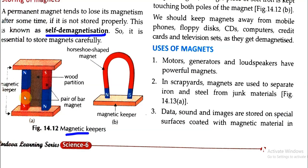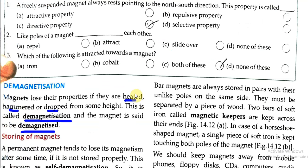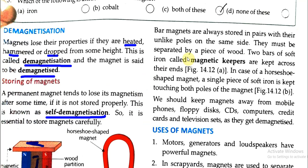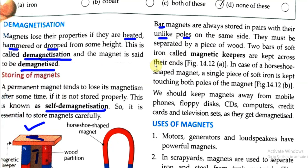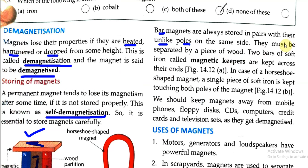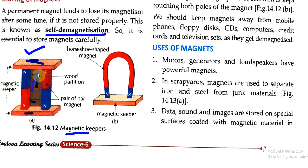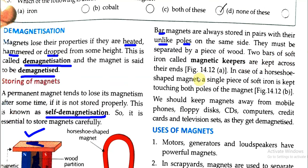These are the magnetic keepers. There are two wood partitions, packed from above and below with wood. This is a south pole and this is a north pole. Bar magnets are always stored in pairs with their unlike poles on the same side. When bar magnets are stored, the unlike poles should be on the same side — north pole here and south pole there. They must be separated by a piece of wood.